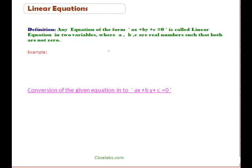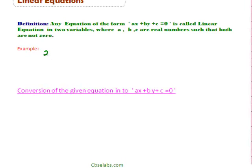Hello and welcome to this section. In this section we discuss linear equations. First, what is a linear equation? Any equation of the form ax plus by plus c equal to 0 is called a linear equation in two variables, where a, b, c are real numbers such that both a and b are not zero. Take an example: 2x plus 3y plus 4 is equal to 0 is a linear equation in x and y.